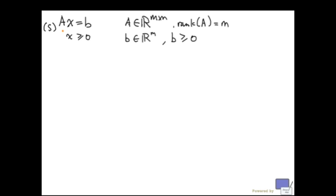If that's not the case, say bi is negative, we can just multiply the i-th equation with minus 1.